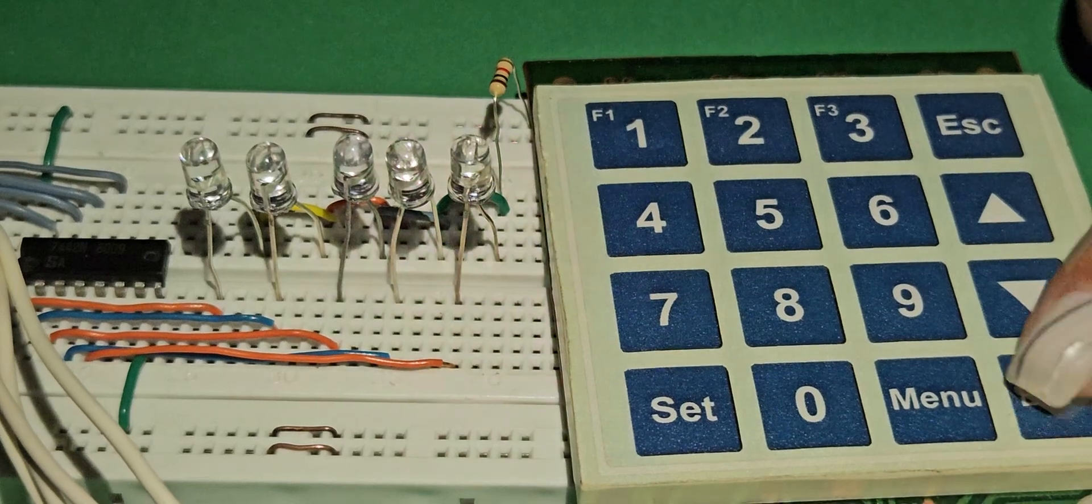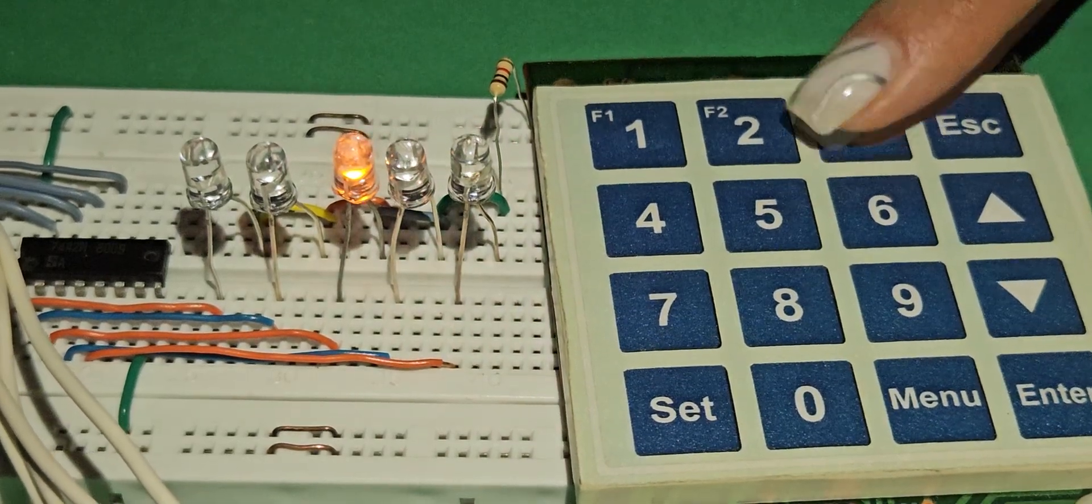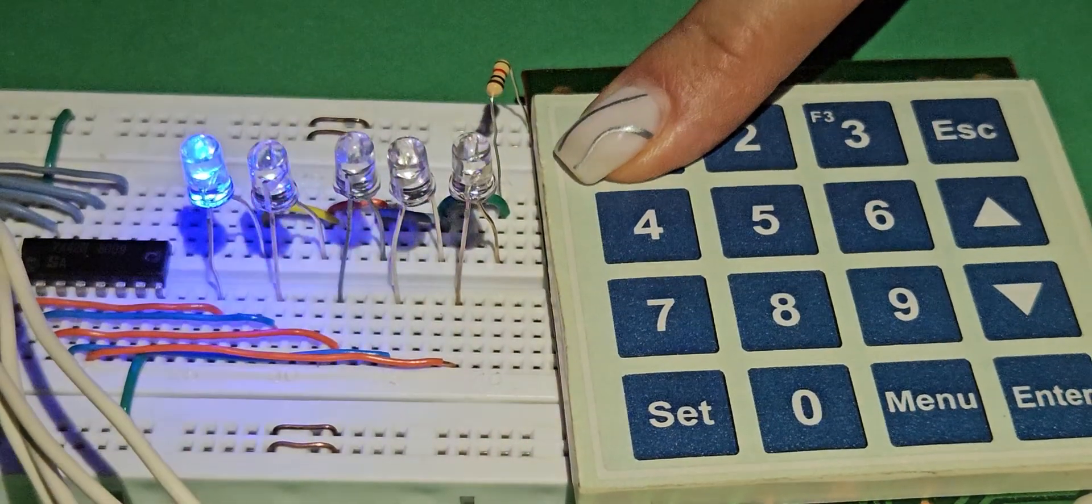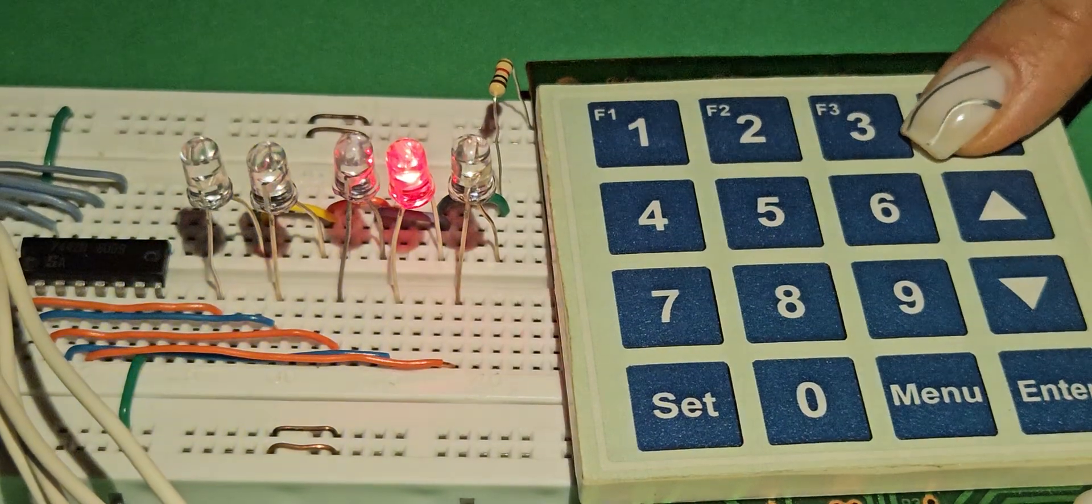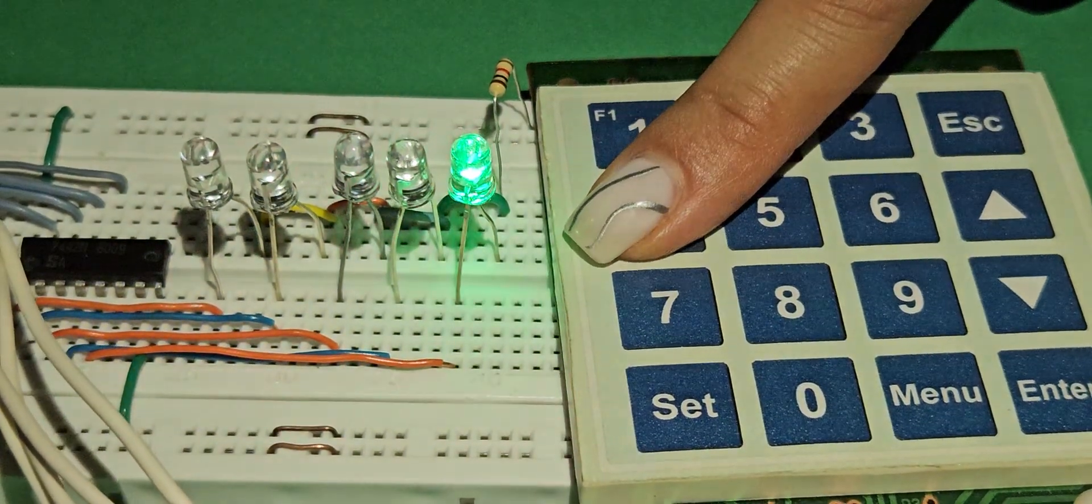Since IC7442 is a binary to decimal converter, it will only produce numbers between 0 and 9 and for numbers greater than 9, none of its outputs will be activated.